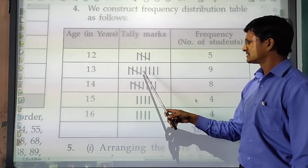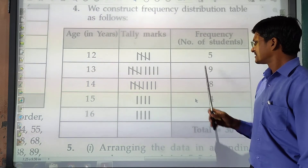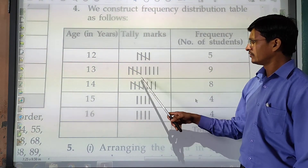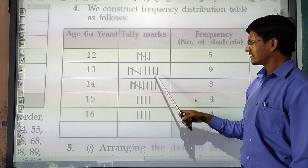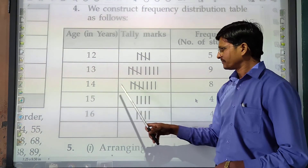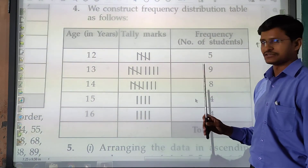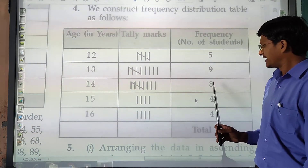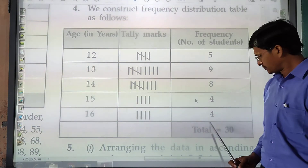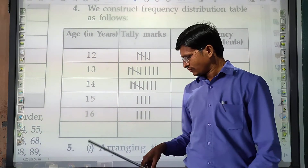For age 13, there are 9 students. For age 14, there are 8 students. For age 15, there are 4 students. For age 16, there are 4 students. The total number of students is 30. We must arrange the frequency data carefully and verify the total.